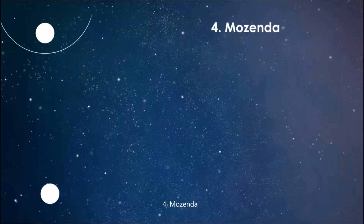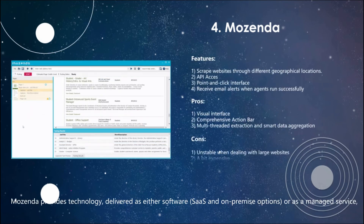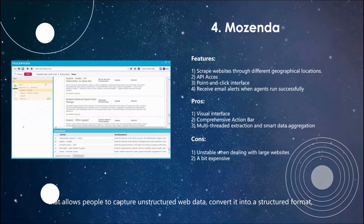4. Mozenda. Mozenda provides technology, delivered as either software or as a managed service, that allows people to capture unstructured web data, convert it into a structured format, then publish and format it in a way that companies can use.